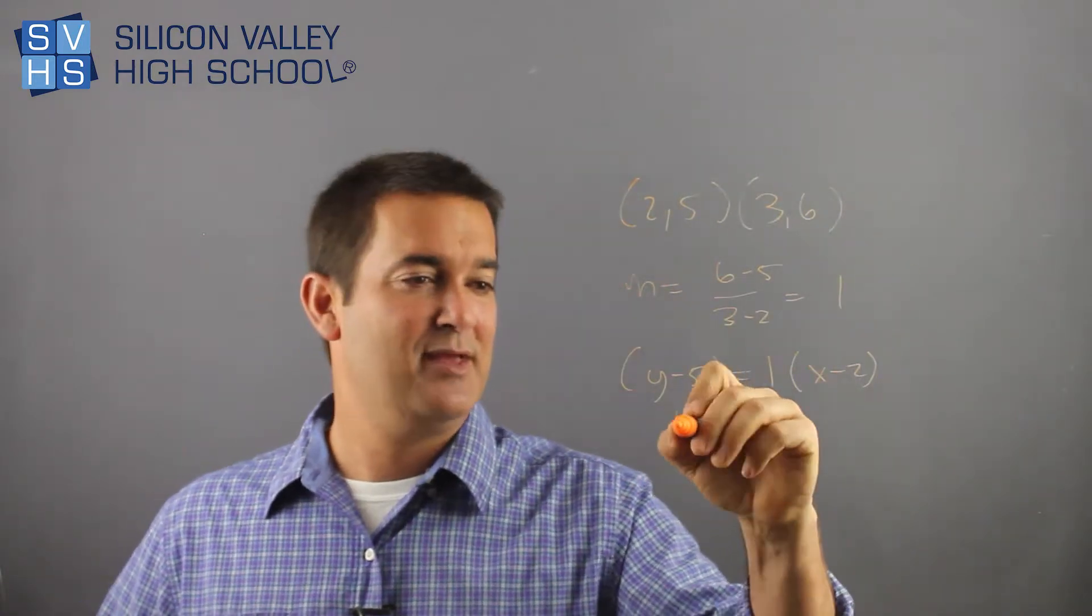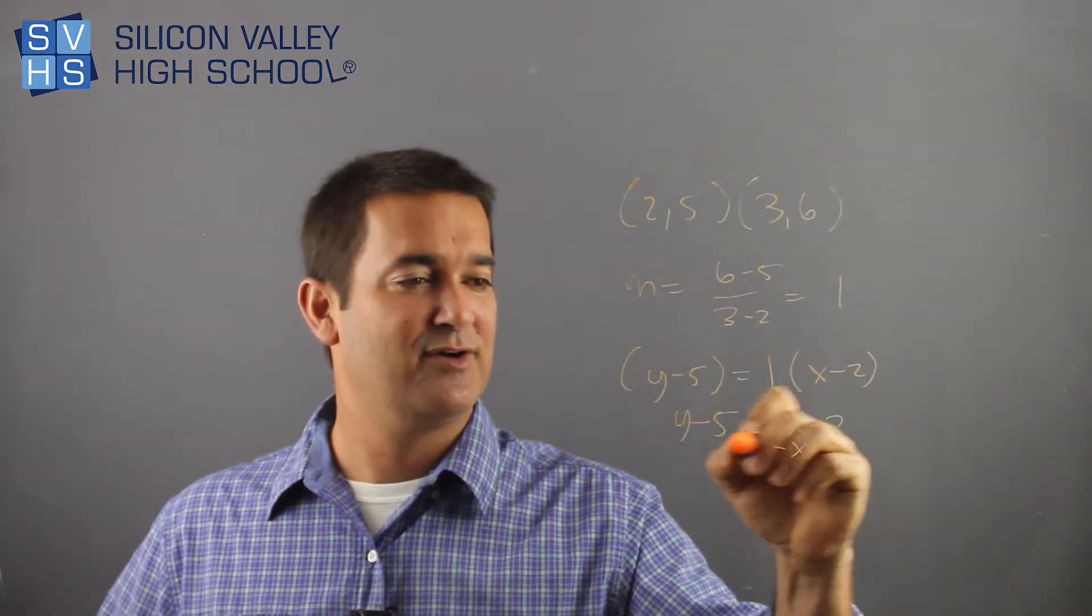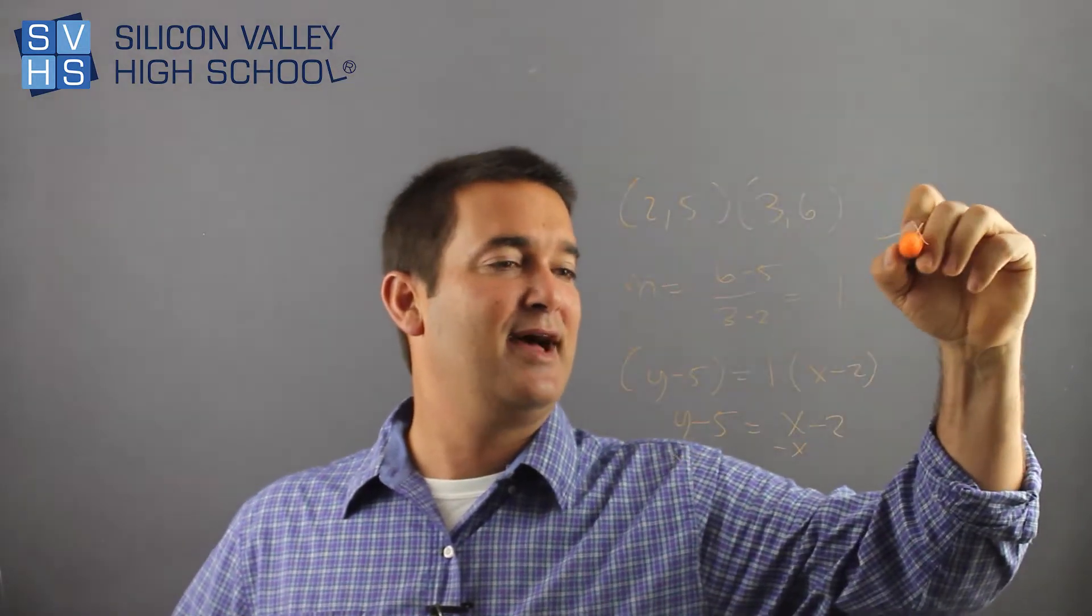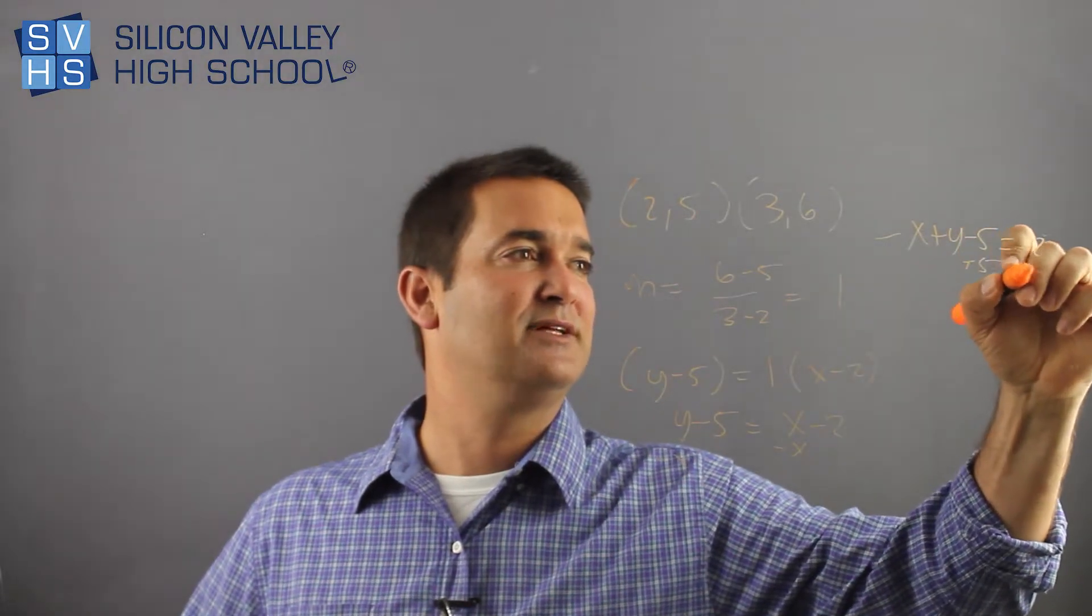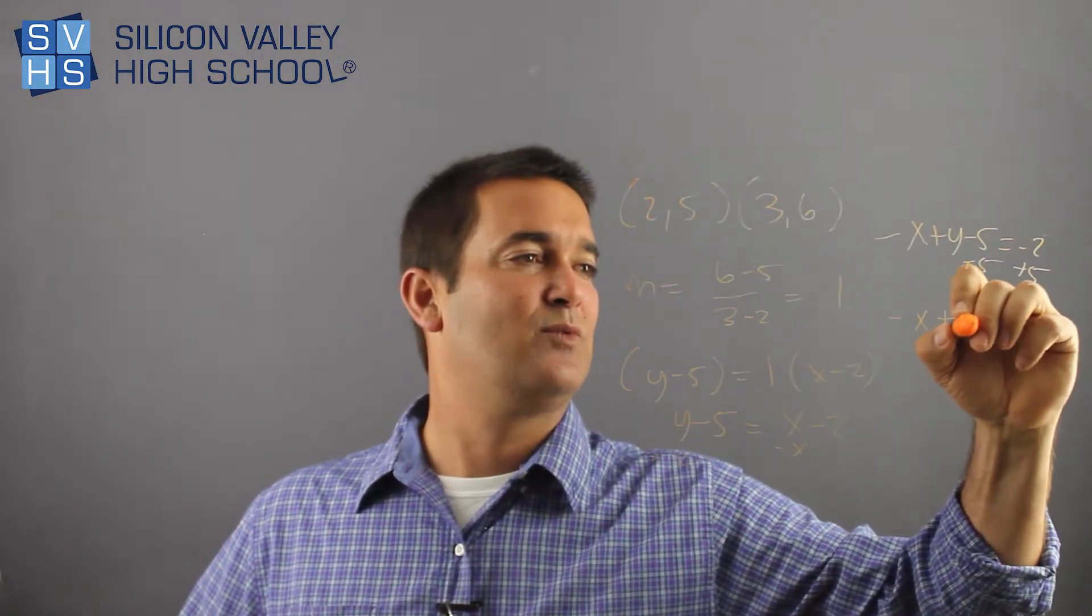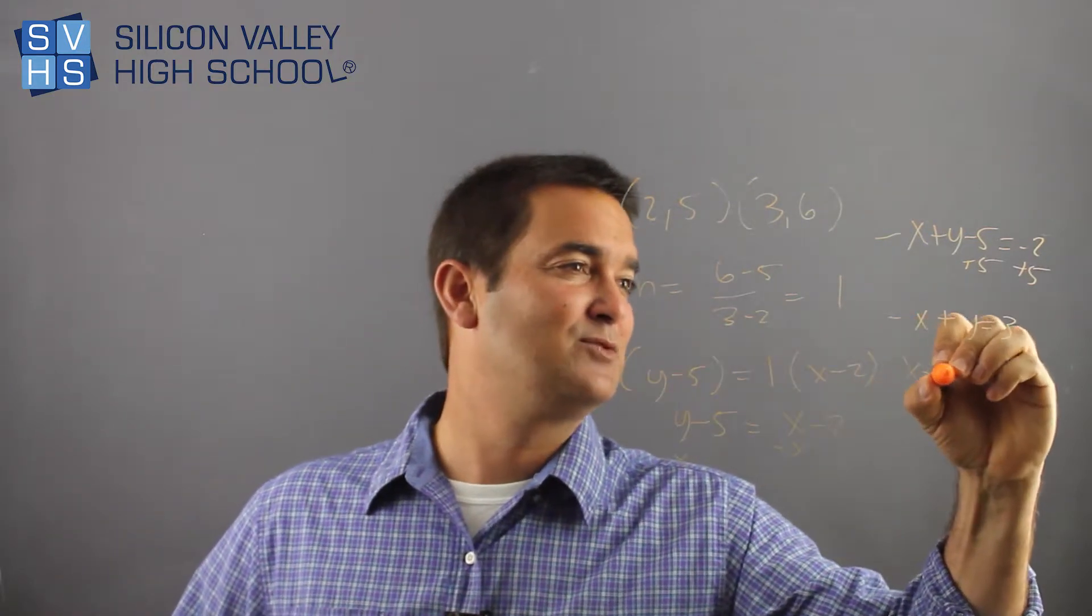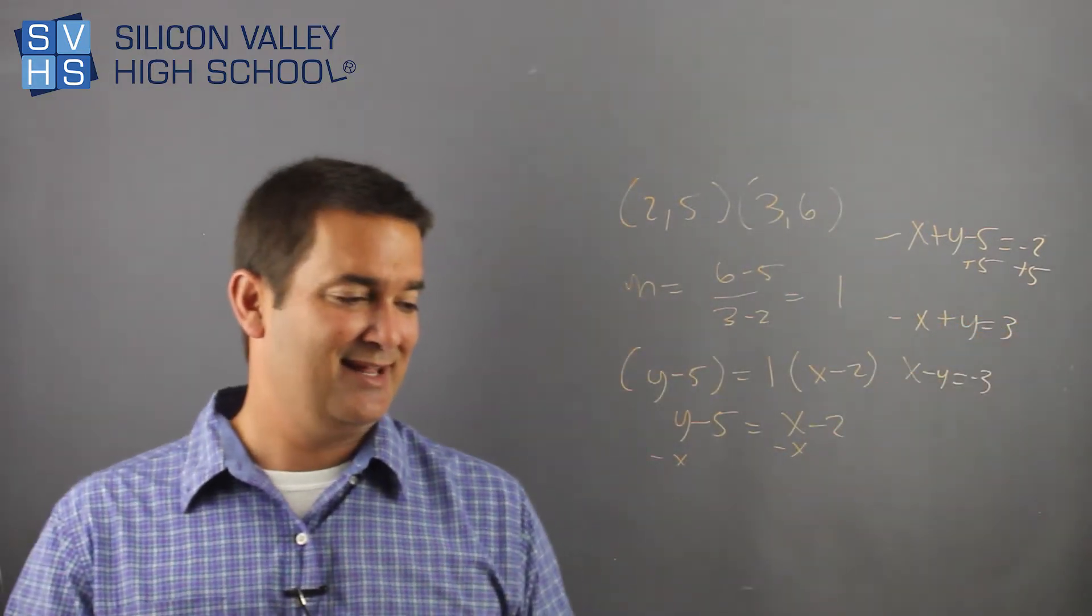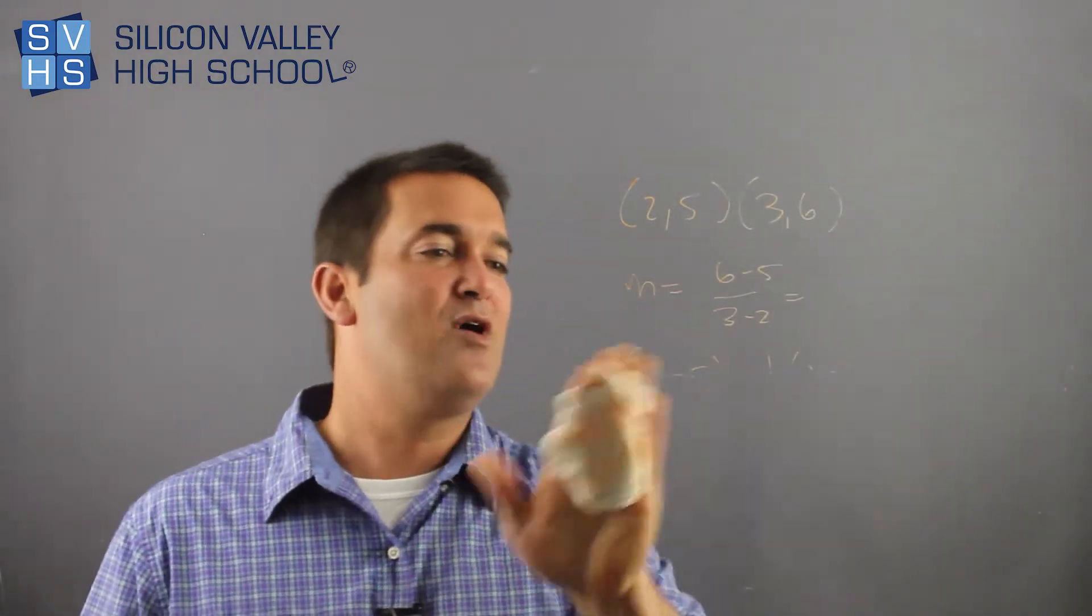And then from here, multiply it all out, mess with it and get to standard form. y minus five, distribute the one. Minus my x over. Then I would have negative x plus y minus five equals negative two, plus five, plus five. Negative x plus y equals three. Divide everybody by negative. Then you'd have x minus y equals negative three. So that's it. They're pretty straightforward. Do the problem in whatever form you want and then switch it to standard.